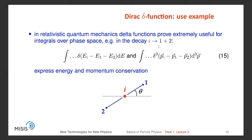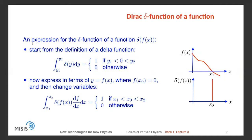In relativistic quantum mechanics, delta functions prove extremely useful for integrals over phase space. For example, in the decay where particle a goes to particles 1 and 2, we can use the delta function in an integral to express energy and momentum conservation. Integrating over all possible values of the energy and momentum of particles 1 and 2, this expression automatically enforces energy-momentum conservation in the decay.